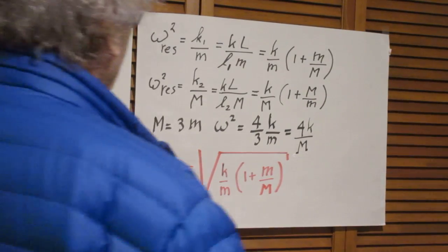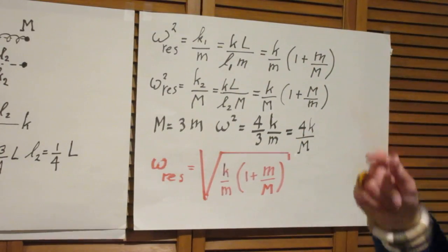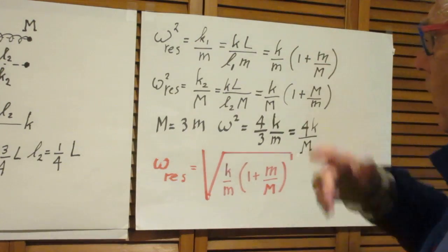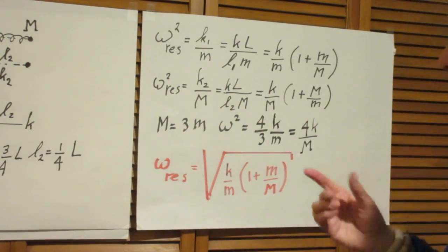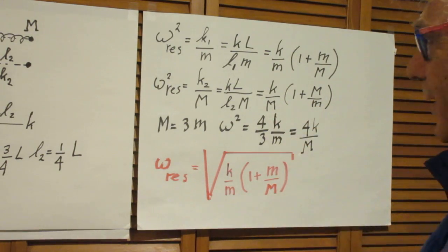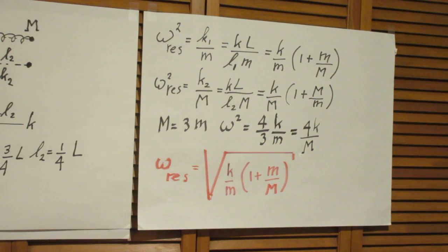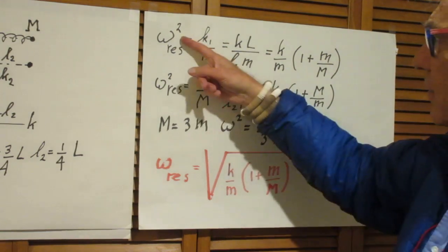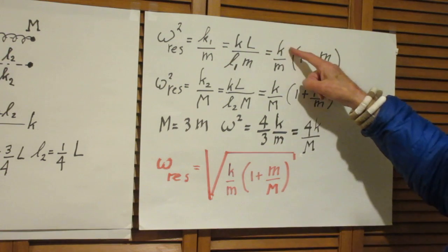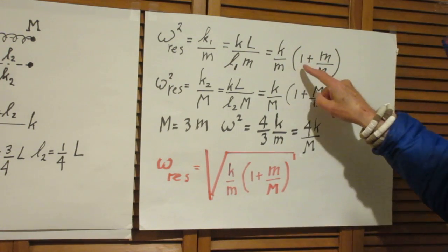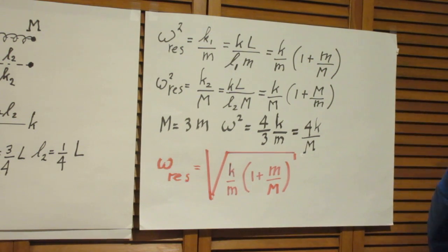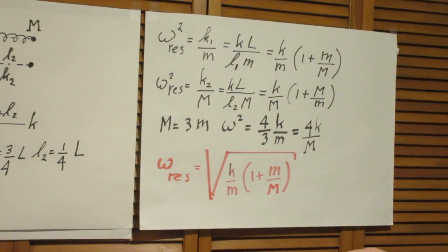So, if we go to the spring K1 on the left, then the resonance frequency squared is of course K1 over little m. And the resonance frequency of the spring on the right is K2 over capital M. Well, it follows immediately that the square of the resonance is K over lowercase m times 1 plus lowercase m over capital M.